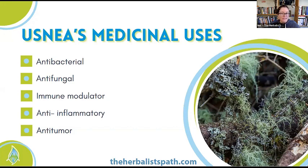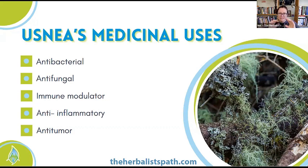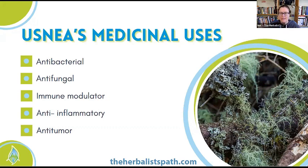Alcohol-based extracts of usnea have been shown to have anti-tumor and anti-inflammatory actions. The usneic acid can also improve resistance to colds and flus. Most of the immune-stimulating properties come from polysaccharides inside the white stretchy inner core of the usnea. You need to both heat it and alcohol-extract it to get both the polysaccharide-rich and usneic-acid-rich parts — I've shared instructions on how to do that in the recipe.